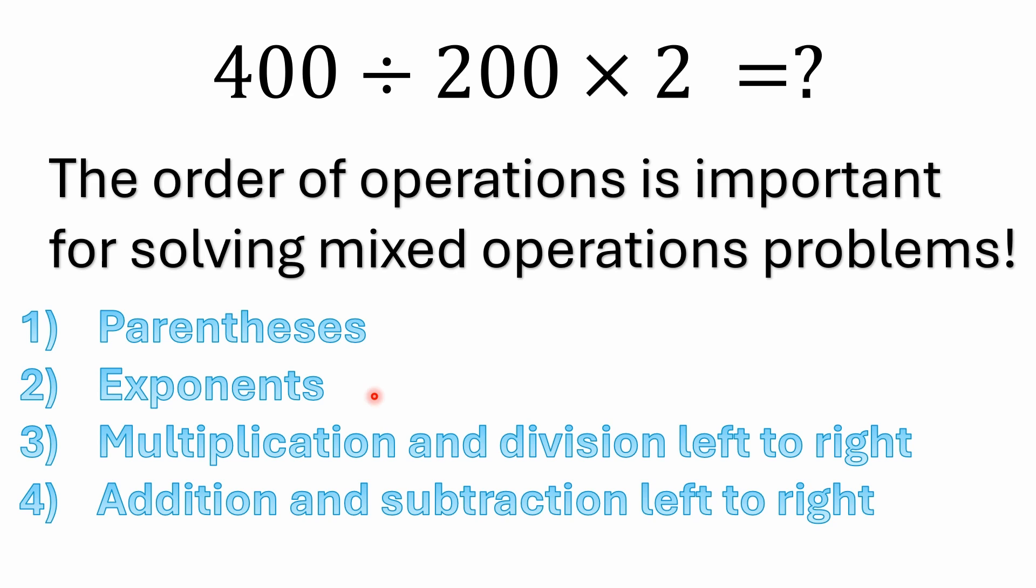The way that we look at the order of operations is that multiplication and division have equal precedence and they're just solved left to right. So in this case, we've got the division before the multiplication going left to right, so we solve the division first. I'm going to get into some other things in a little bit because there's a lot of confusion over this.